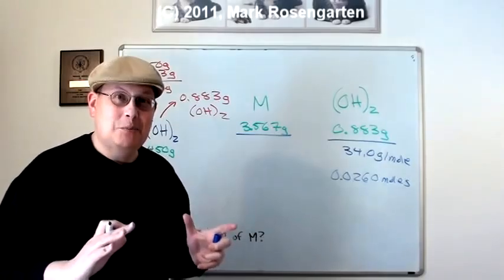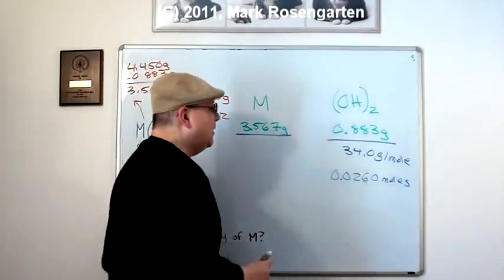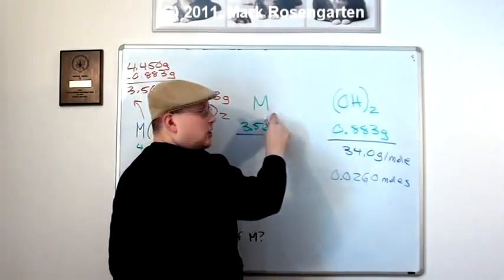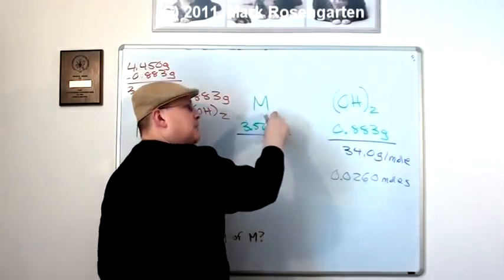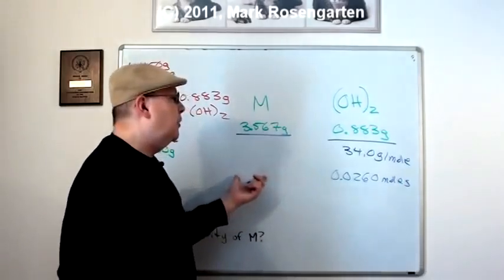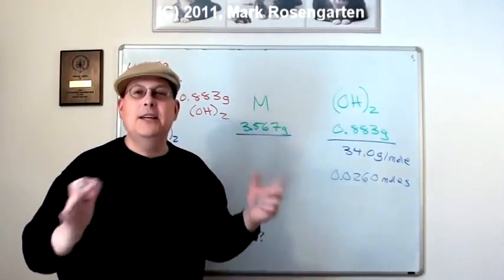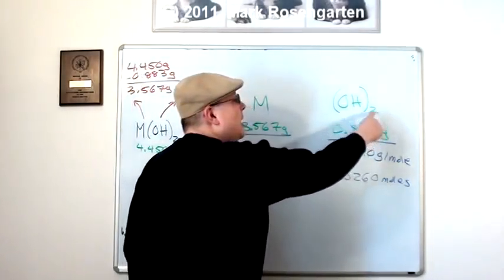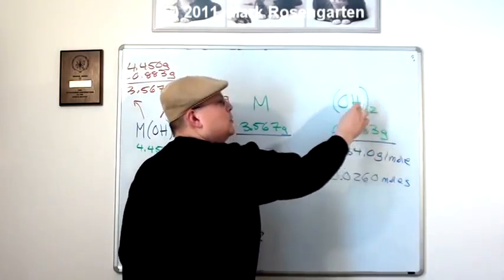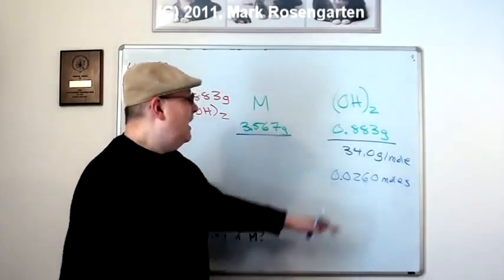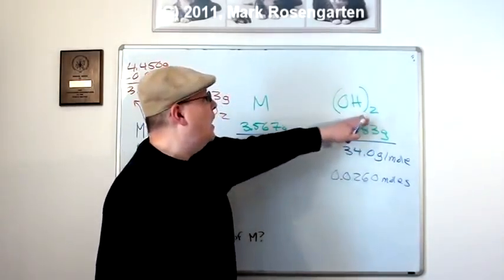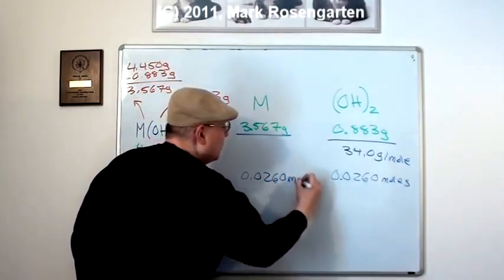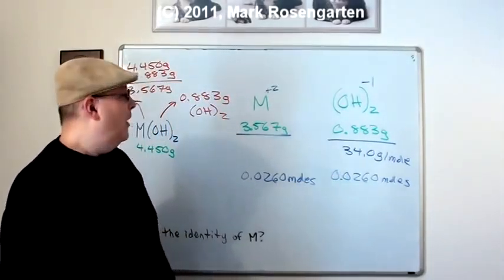Now, the first time I tried this problem, I ended up beating my head against the wall because I was trying to find out how many moles of metal there are. And I said, well, there's a two here. So it's a two to one mole ratio. So whatever the moles of hydroxide are, the moles of metal must be half of that. And so I went 0.0130 moles. And I was getting this completely impossible answer. And then I realized what I did wrong. I already took care of that, too, by making the formula mass the mass of those two hydroxides. So I don't need to do that. If I had 0.0260 moles of the hydroxide ions, I'm going to have 0.0260 moles of the metal ions.